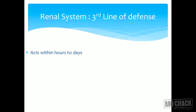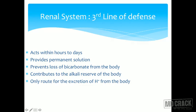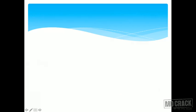The renal system — third line of defense — acts within hours to days. It provides a permanent solution, prevents loss of bicarbonate from the body, contributes to the alkali reserve, and is the only route for excretion of protons from the body. It has tremendous capacity, especially in excreting ammonium chloride or ammonium ions.